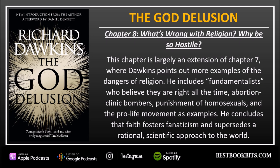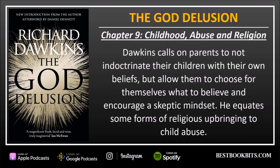Chapter 8: What's Wrong with Religion? Why Be So Hostile? This chapter is largely an extension of Chapter 7 where Dawkins points out more examples of the dangers of religion. He includes fundamentalists who believe they are right all the time, abortion clinic bombers, punishment of homosexuals, and the pro-life movement as examples. He concludes that faith fosters fanaticism and supersedes a rational scientific approach to the world. Chapter 9: Childhood Abuse and Religion. Dawkins calls on parents to not indoctrinate their children with their own beliefs but allow them to choose for themselves and encourage a skeptical mindset. He equates some forms of religious upbringing to child abuse.